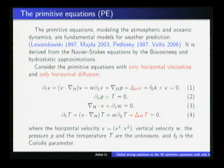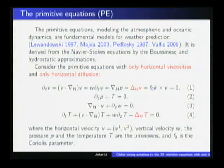It has four equations. The first is the momentum equation. This is the hydrostatic approximation. This is the standard incompressibility condition. And this is the temperature equation. The unknowns are the horizontal velocity V, which has two components V1 and V2, the vertical velocity w, the pressure p, and the temperature T.